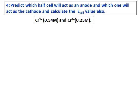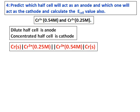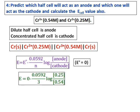Predict which half cell will act as the anode and which will act as the cathode, and calculate the E cell value. The concentrations given are chromium 0.54 molar and chromium 0.25 molar. We know that the dilute half cell will be the anode and the concentrated half cell will be the cathode. Therefore, the cell notation will have the dilute one on the anode side and the concentrated one on the cathode side. Use the Nernst equation for concentration cells — E0 equals zero because we have the same electrode. The electron transfer is three, so n equals 3, and the value of E cell comes as 0.007.